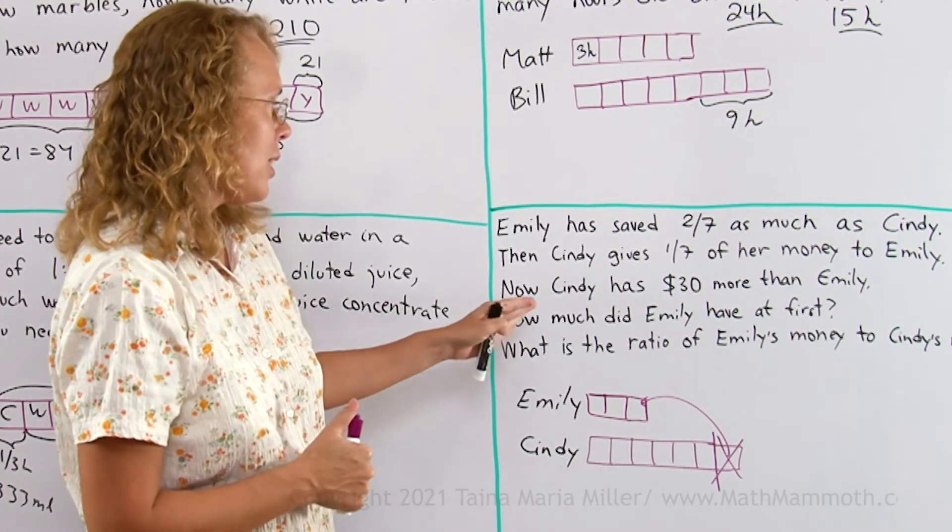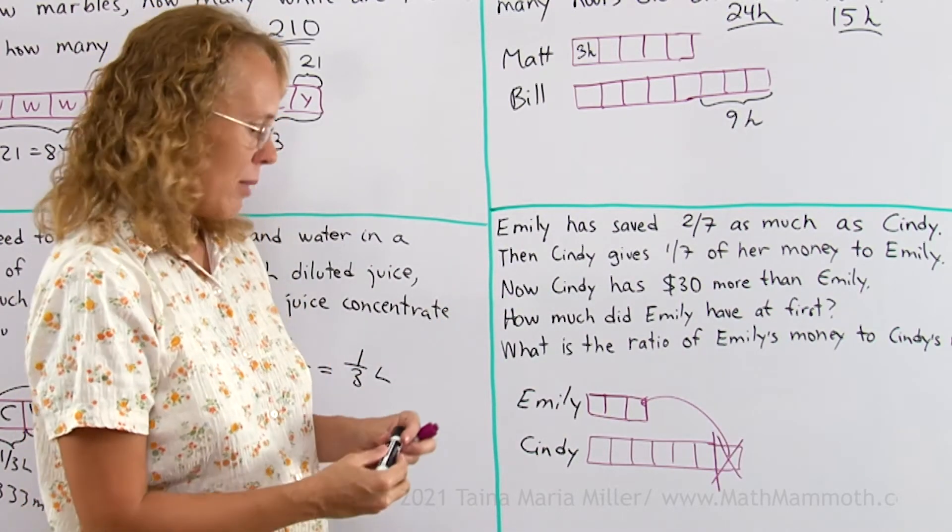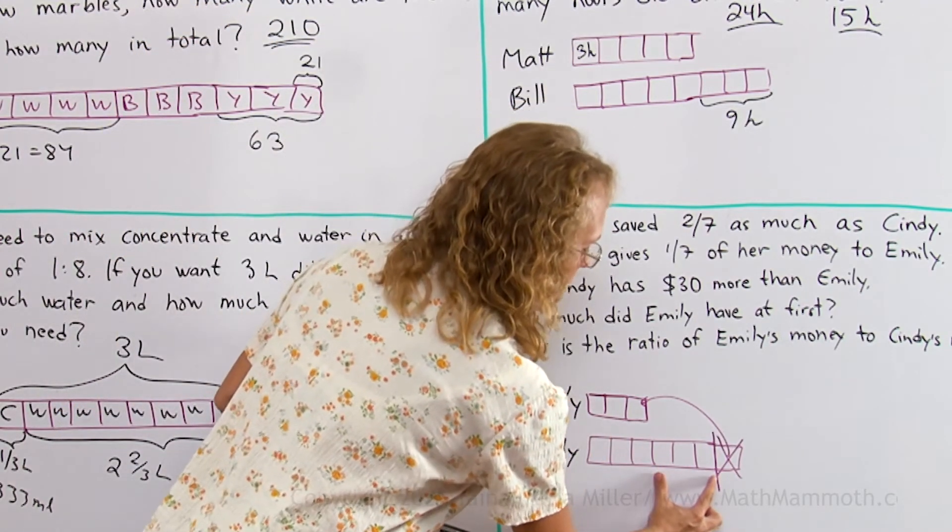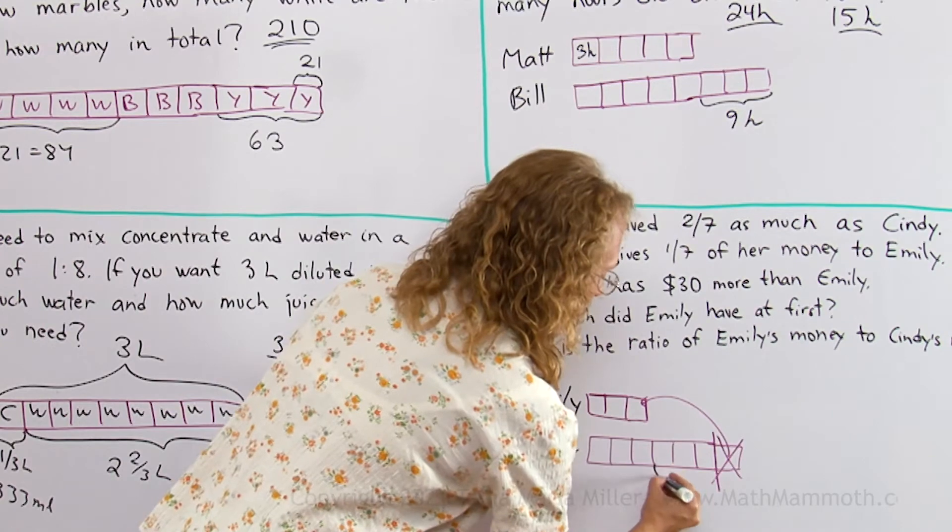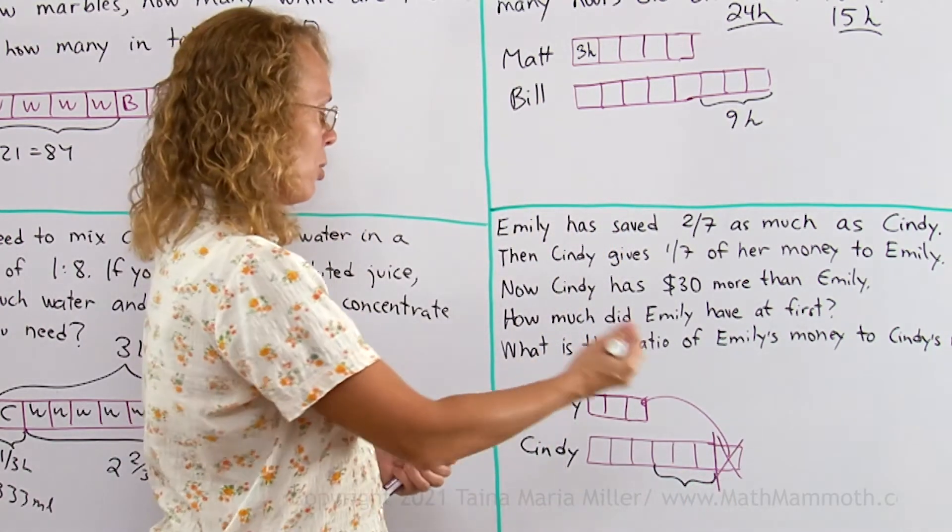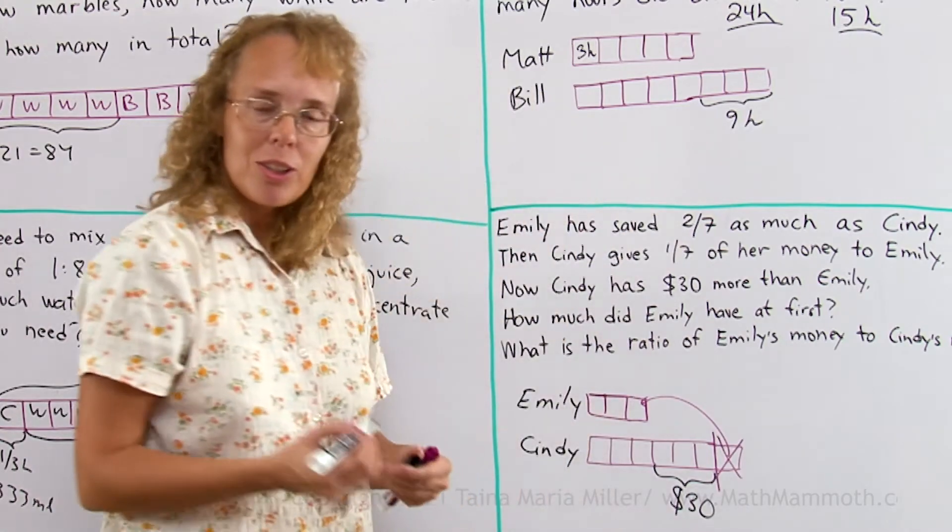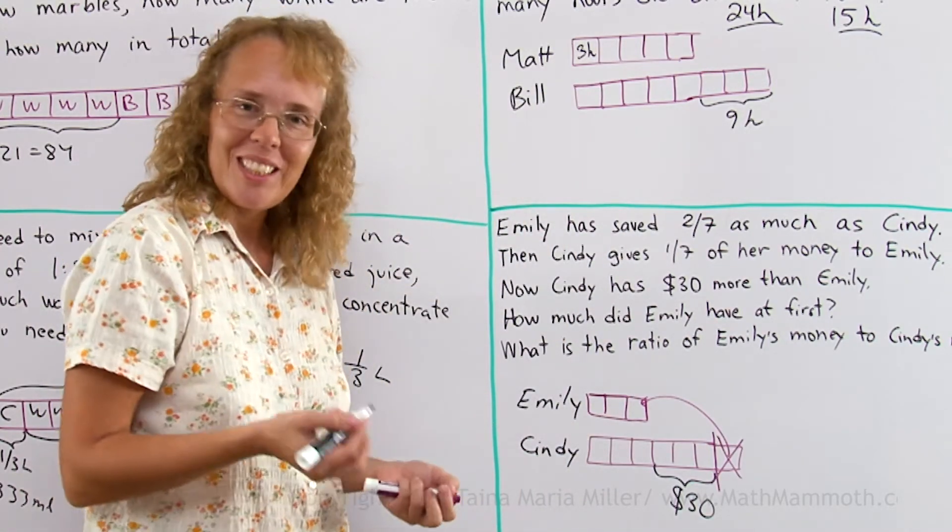And now Cindy has 30 dollars more than Emily. I can easily now put that into my model. How much does Cindy have more than Emily? It is these 3 blocks, right? This is what she has more than Emily, and it is 30 dollars. 3 blocks, 30 dollars, so 1 block must be 10 dollars.